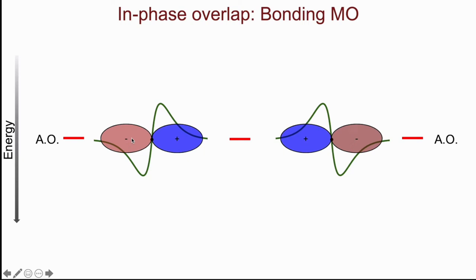In addition to the boundary surface diagram, with the phases indicated, and in this case, I've used both positive and negative signs to indicate the phase. Again, remember, this is phase, it is not charge. I've also used the color to designate those different phases, blue positive, and my reddish color negative.